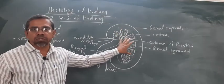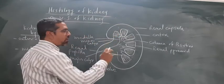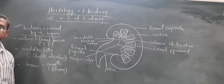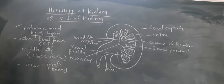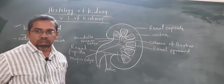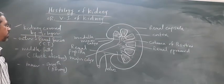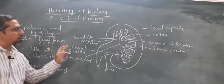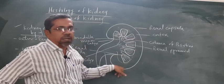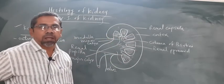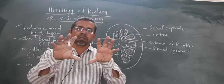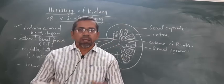Kidney का histological structure हमारे सामने है। Kidney हमारे body का एक vital organ है, इसलिए यह protected form में body के अंदर होता है। इसके चारों तरफ तीन layers पाई जाती हैं। Outer most layer का नाम है renal fascia, which is made by connective tissue। Connective tissue होने की वजह से kidney अपनी abdominal cavity में एक specific location पर fixed रहती है।